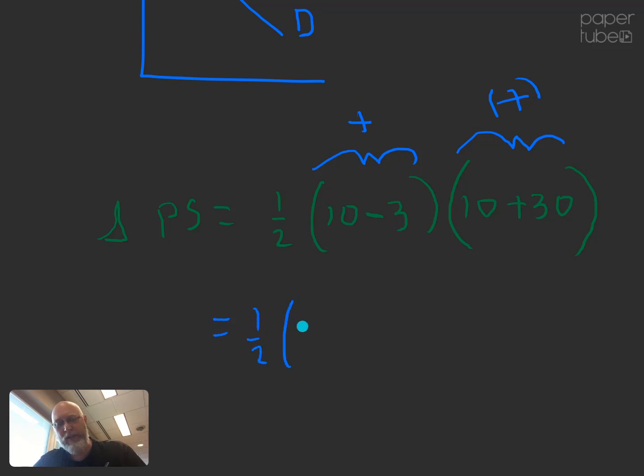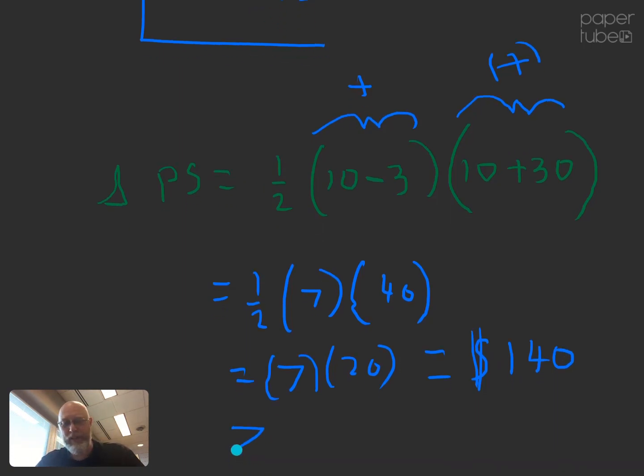So let's do the math. This is just one half of 7 times 40. It's easier to take a half of 40, so half of 40 is 20. So this is just equal to 7 times 20, which is 140. And of course, this is measured in dollars. And here's something that's really important to remember is that this number, our change in producer surplus is greater than zero.